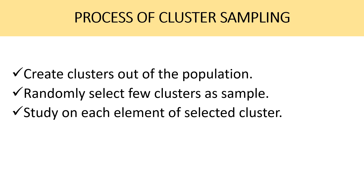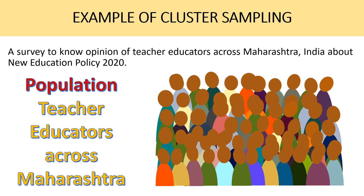Let me explain this through an example. Suppose I want to conduct a survey to know the opinion of teacher educators across Maharashtra in India about the new educational policy 2020. Here, my population would be teacher educators across Maharashtra. With simple random sampling, I would need access to all teacher educators in Maharashtra, which is a clumsy process. To make this convenient, easier, and feasible, I will go with cluster sampling.